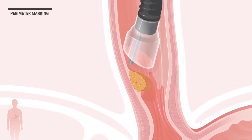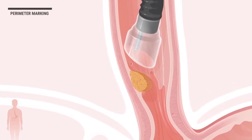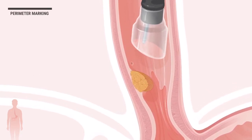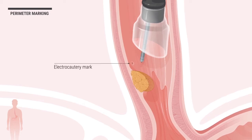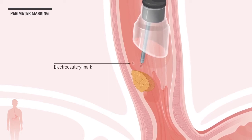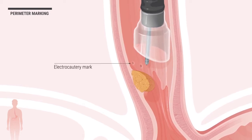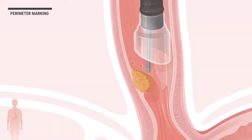First, the perimeter of the tumor or abnormal tissue is marked, defining where the cut or incision will be made.